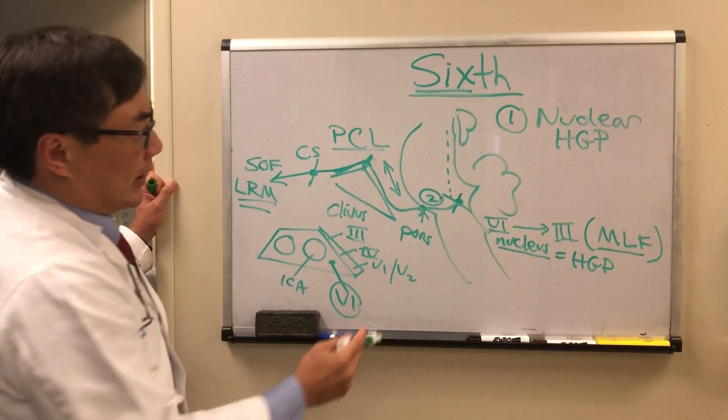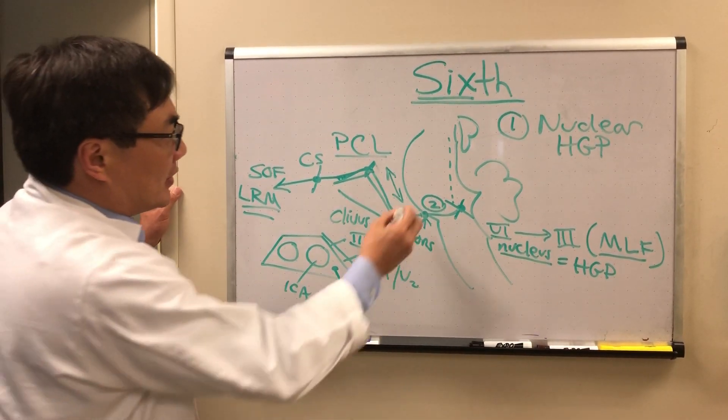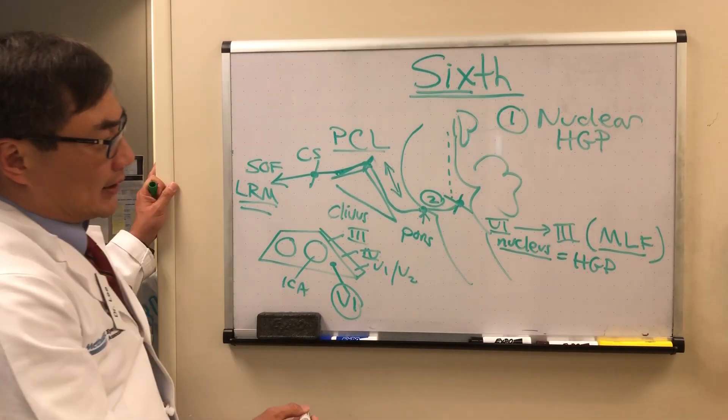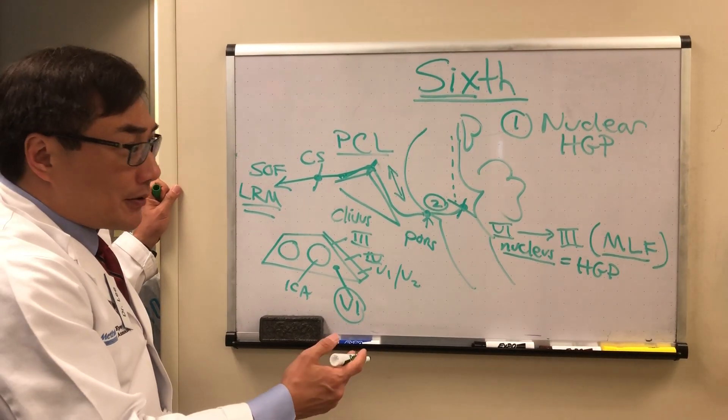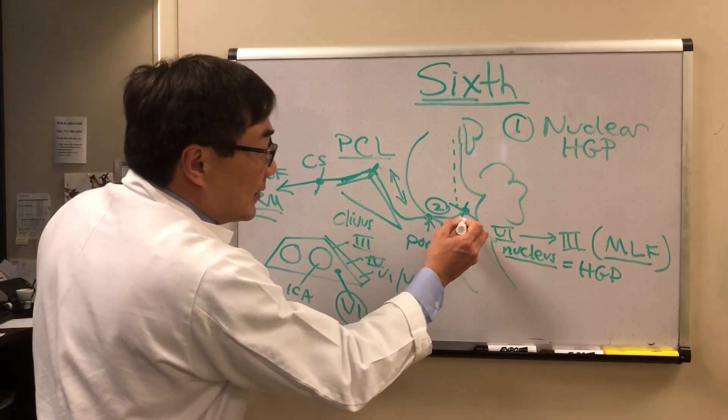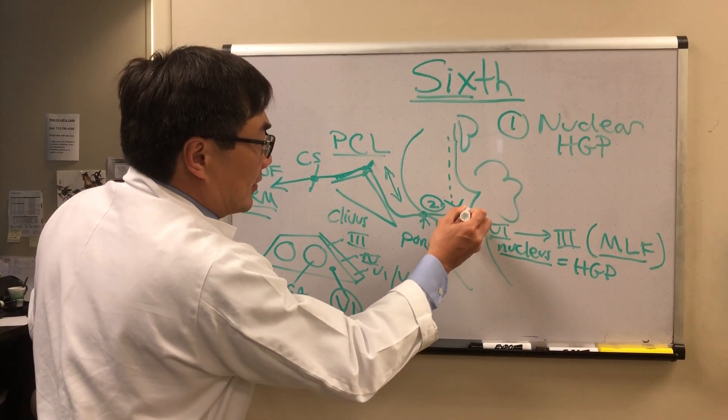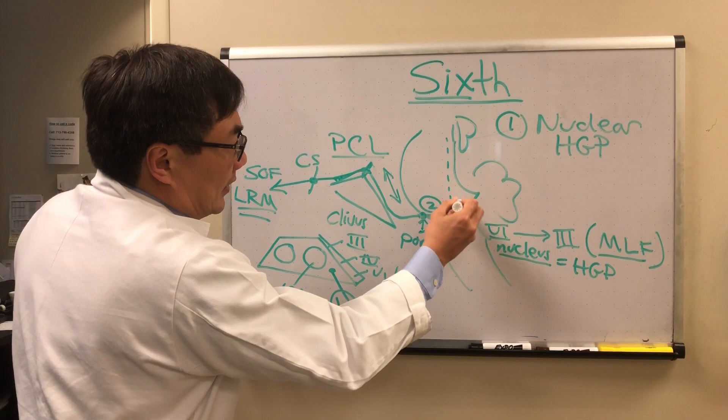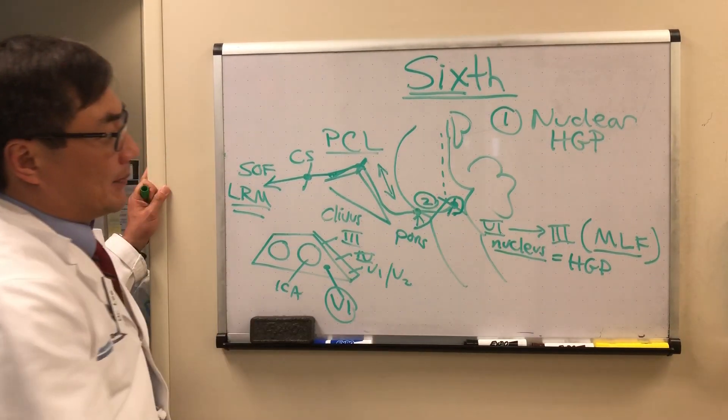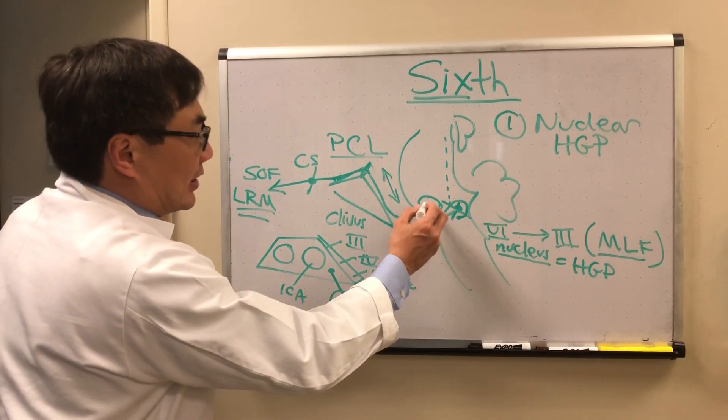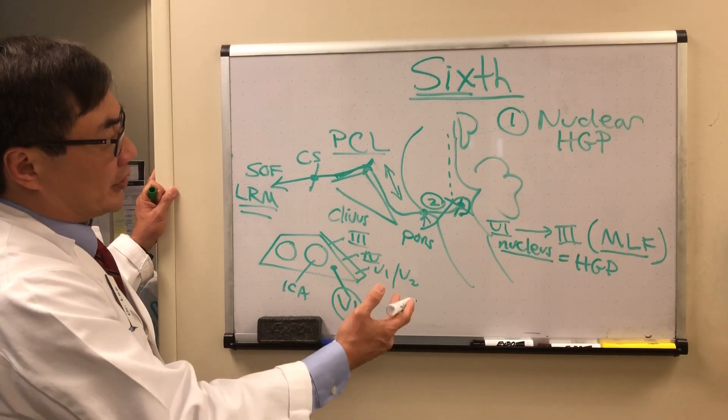that a sixth nerve palsy can be associated with a contralateral hemiparesis from corticospinal tract involvement—the Raymond syndrome—or Miller Gubler, or involve seven because the fascicle of seven wraps around the nucleus of six. And so the brain stem syndromes are defined by the company they keep. So these fascicular syndromes can have hemisensory loss, Horner syndromes, seventh nerve palsies, or hemiparesis.